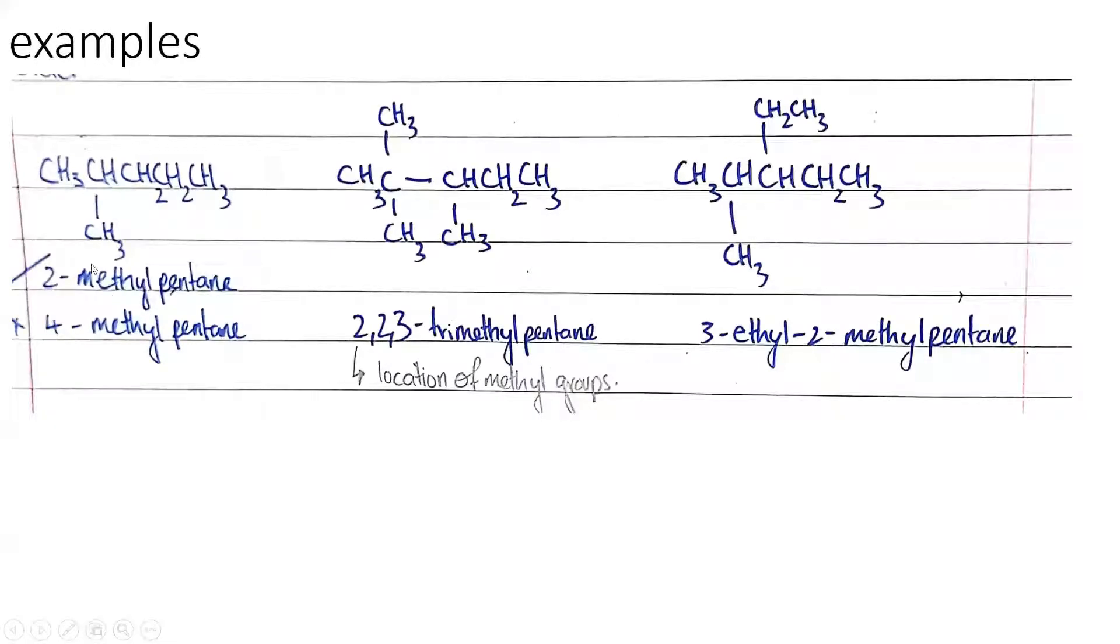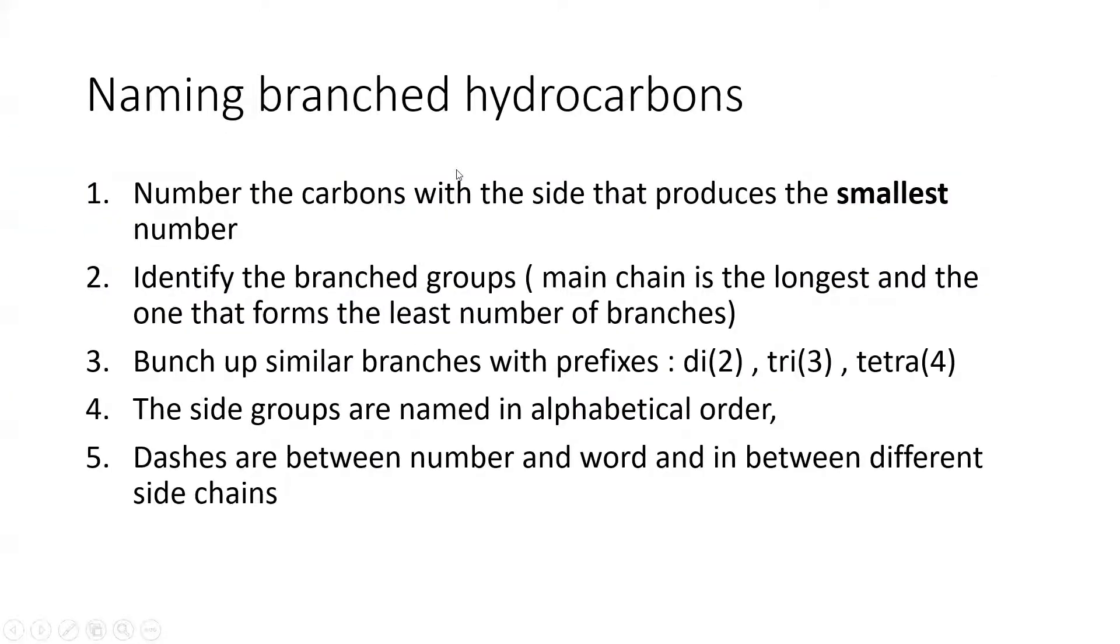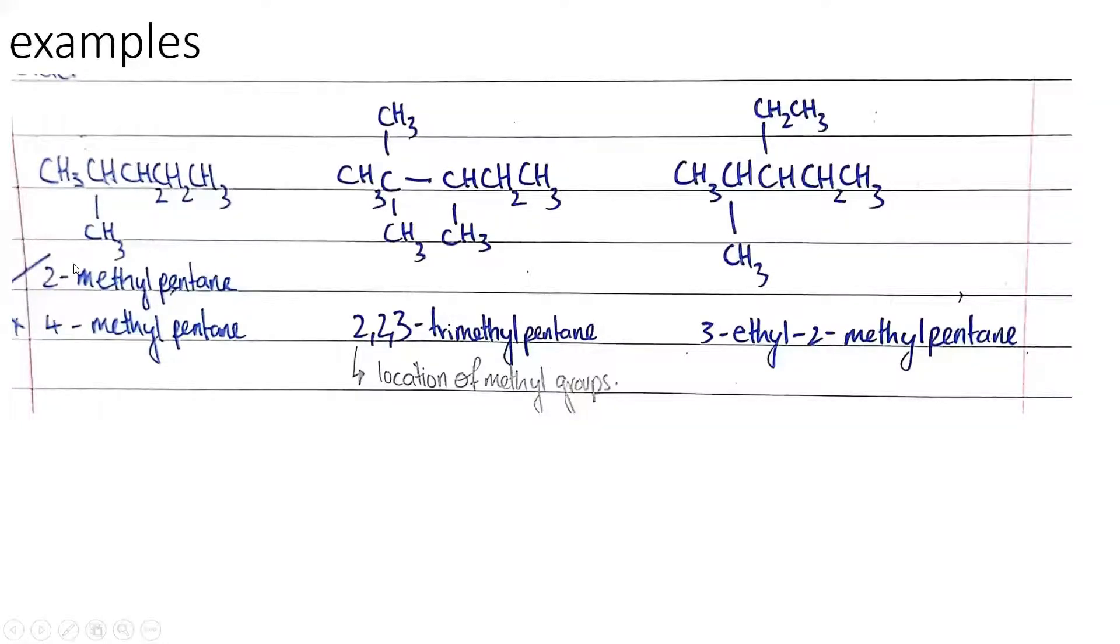In this case, the correct naming scheme is 2-methylpentane. Again, it's 2 because, like I said, you start with the side that produces the least number, which is in this case 2. So if you start from this side, it's 1, 2. As compared to this side, it's 1, 2, 3, 4. So you take 2. And the main chain is usually the longest chain. It's going to be 1, 2, 3, 4, 5-pentane. Instead of 1, 2, 3, which is propane. So that's the naming convention for this.